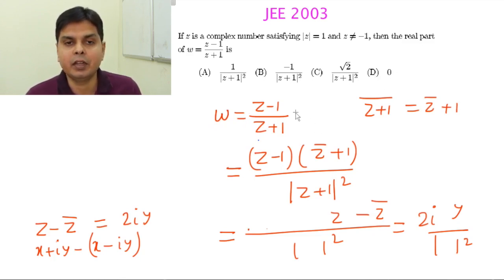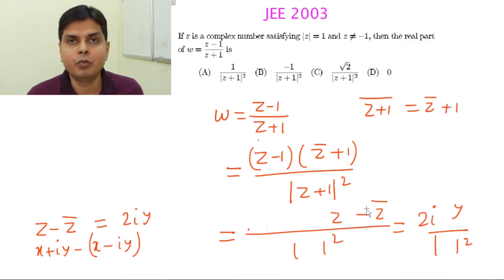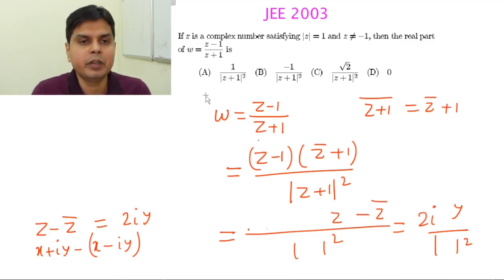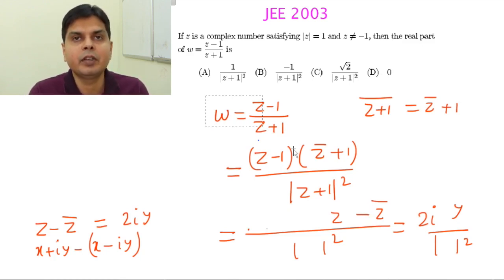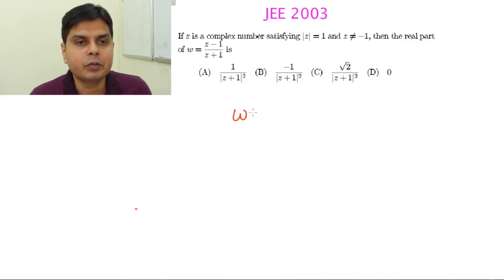Since the complex number W is purely imaginary, the real part has to be 0. So 0 is the answer. This completes Method 1. Now let's solve the same problem using a different method.